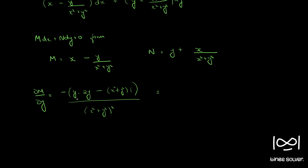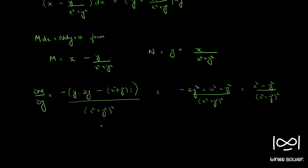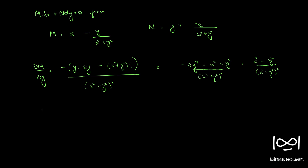Opening up and taking the minus sign inside, we have minus 2y squared plus 2y, giving us (x squared minus 2y squared plus 2y) in the numerator, over (x squared plus y squared) squared.